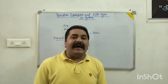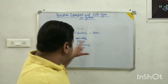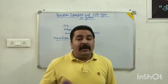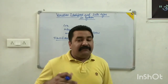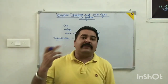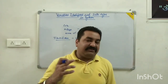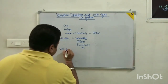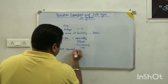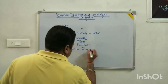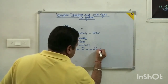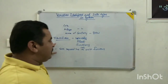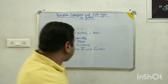Before moving on, we need to follow some rules used in variables and identifiers. Rule number one: each keyword has its own unique value. In programming, each keyword has its own function and unique identification.